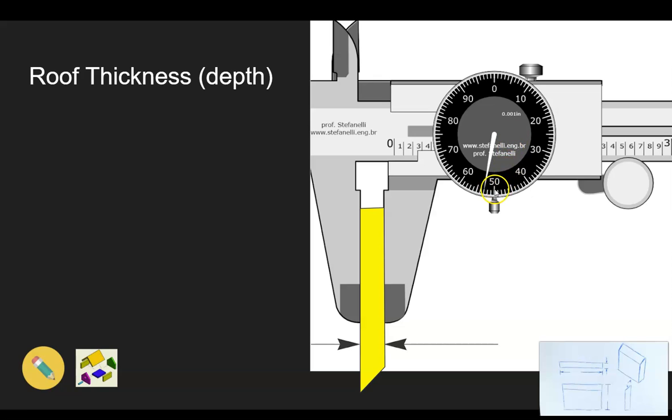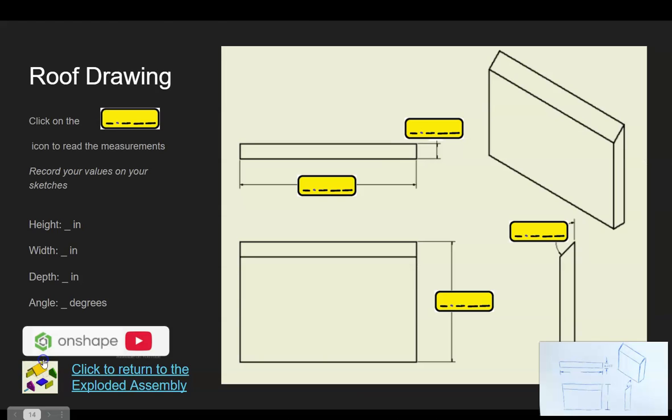We're going to write down 0.2, and then we come down here to the dial to get the following measurements. We're at 0.2, 5, 0, 1, 2, 3. What do we write in our drawing? I'm going to write 0.253 inches, and that's my dimension for the thickness of my roof.